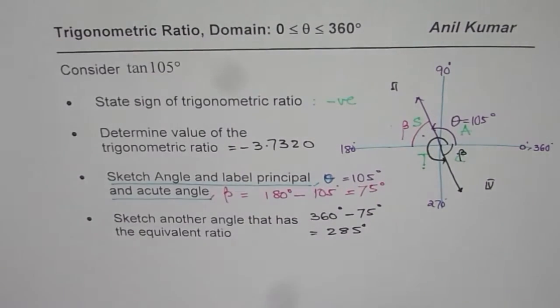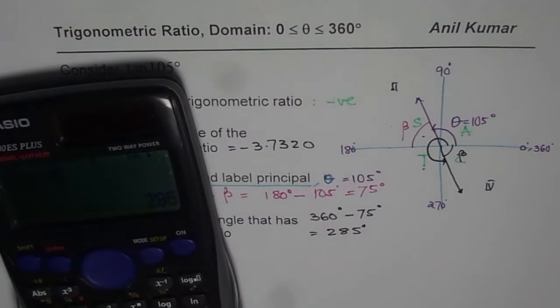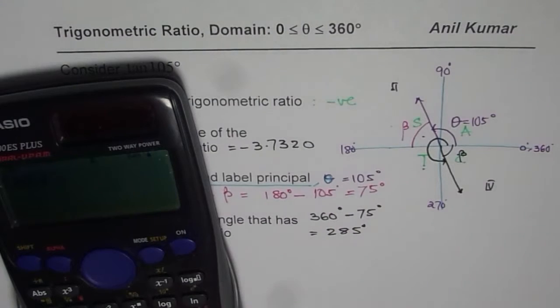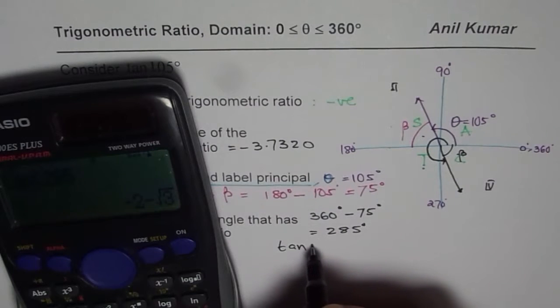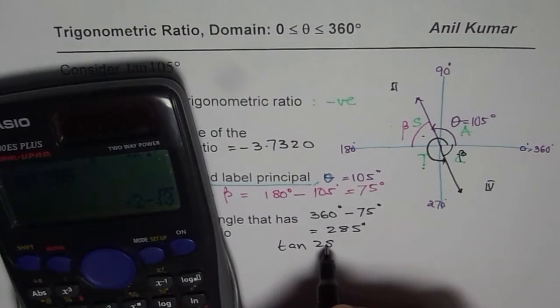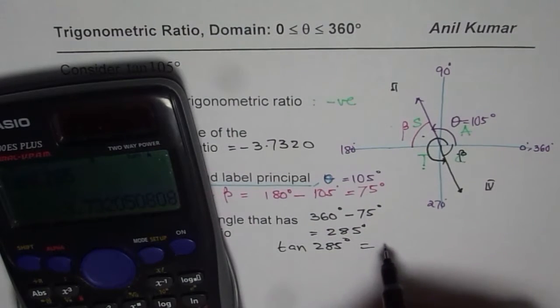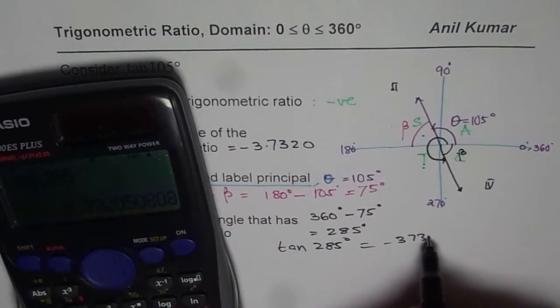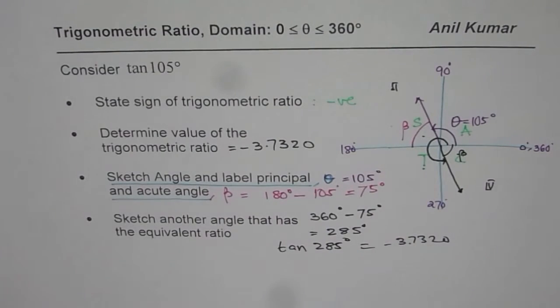So 285 degrees is the other angle, which gives us the same answer. Let us check. So we will do tan of 285 equals to, so we will do tan of, just a check, 285 degrees is equal to, let us put it in decimals, minus 3.7320. So you can compare, they are exactly same values.